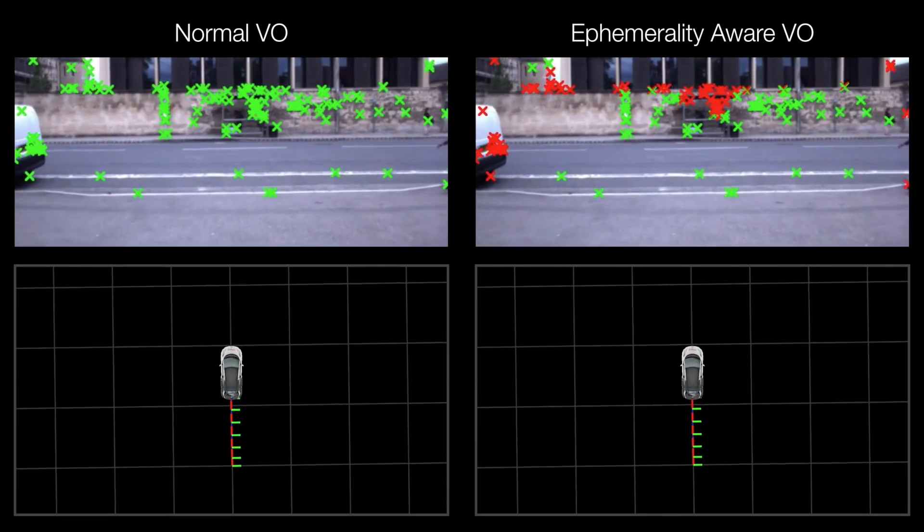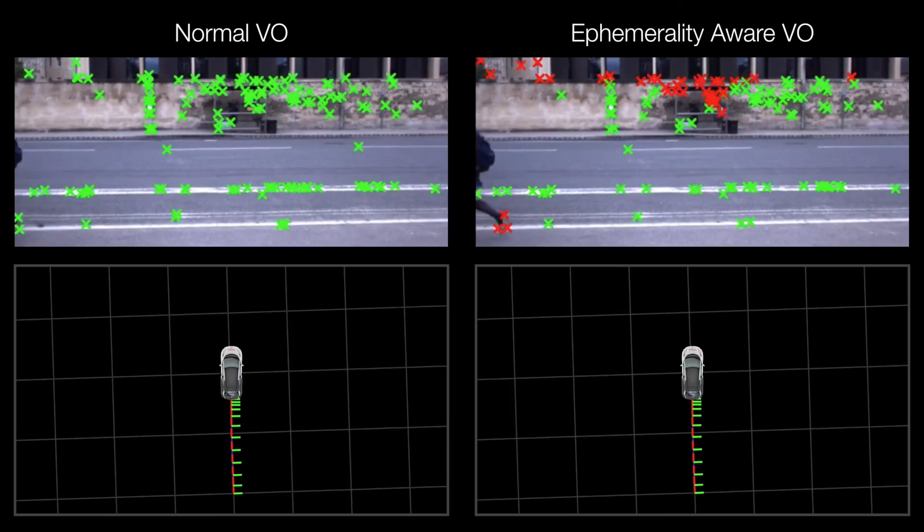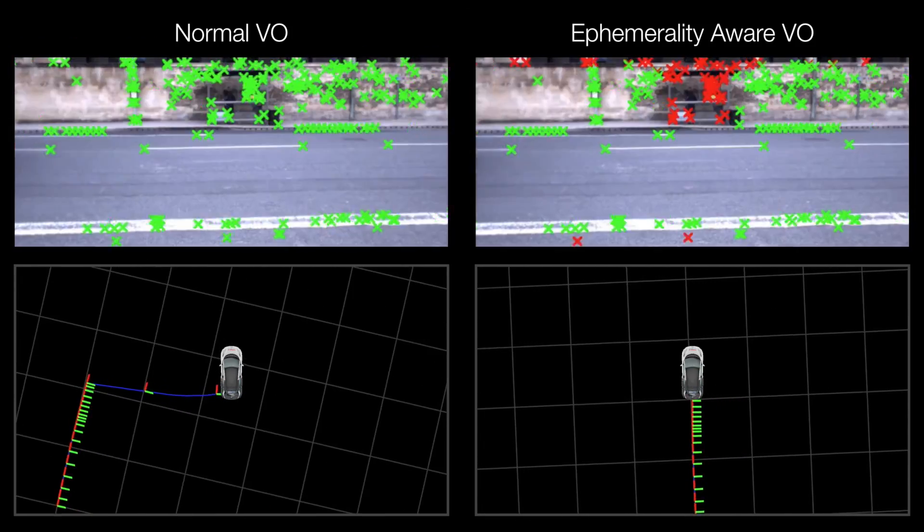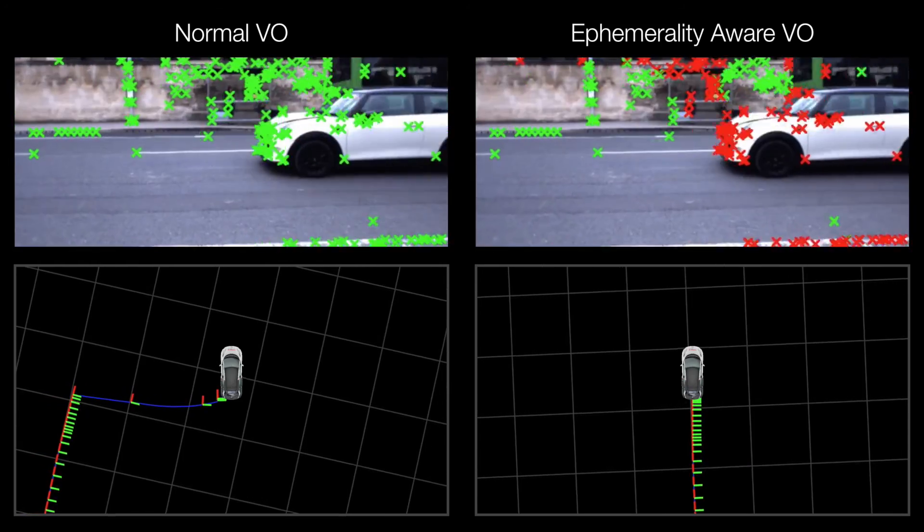Standard approaches to visual odometry that use outlier rejection methods such as RANSAC fail when the scene is predominantly occluded by an independently moving object like a bus. Our approach on the right ignores distracting objects in the scene and is robust to such situations.